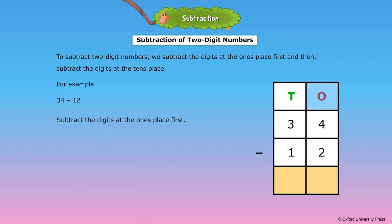Subtract the digits at the 1's place first. 4 1's minus 2 1's is equal to 2 1's. Then subtract the digits at the 10's place. 3 10's minus 1 10 is equal to 2 10's.